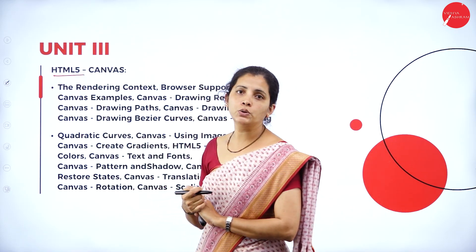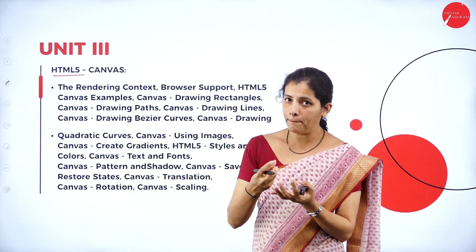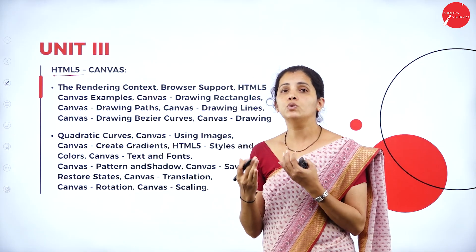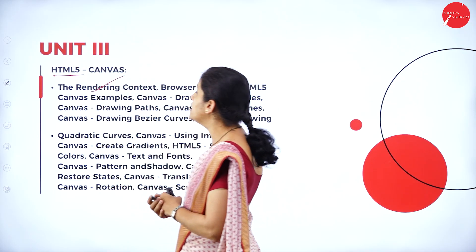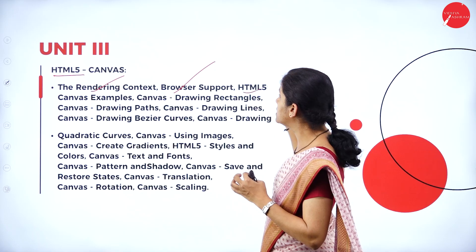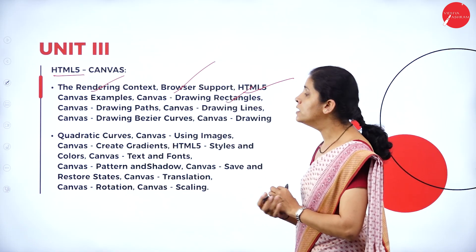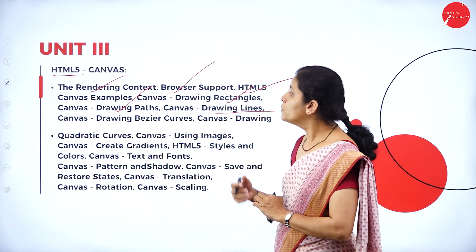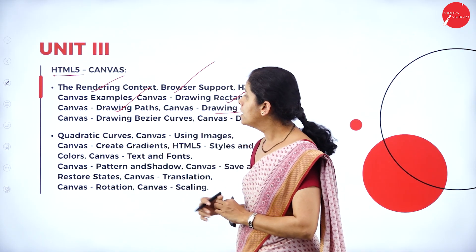Under unit three, I am going to study canvas. Canvas is used when I want to include graphics in my web page or website with attractive colors and shapes. We will study the rendering context, which browsers support canvas, HTML canvas examples, and canvas drawing — such as drawing rectangles, paths, lines, and bezier curves. In chapter two of unit three, we will study quadratic canvas, using images in canvas, creating gradients, HTML5 styles and colors, canvas text and fonts.